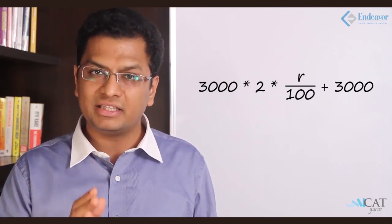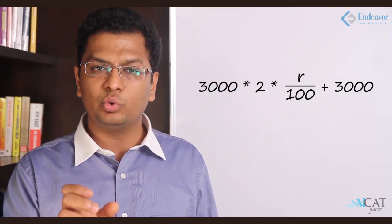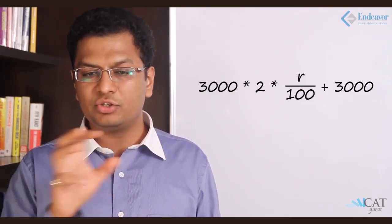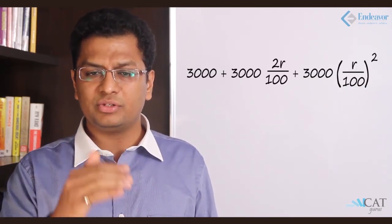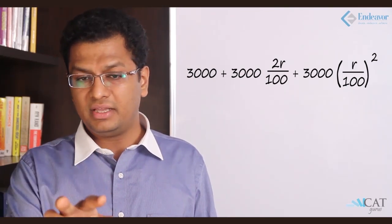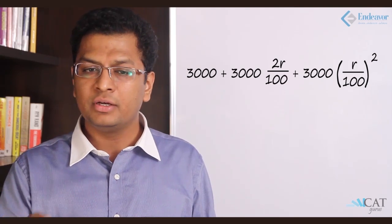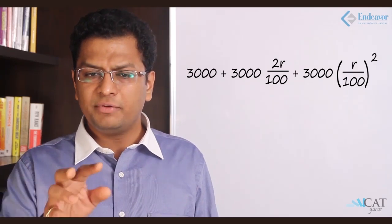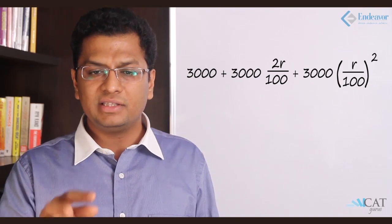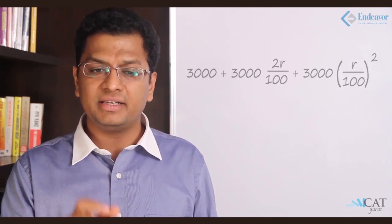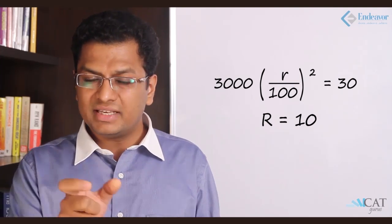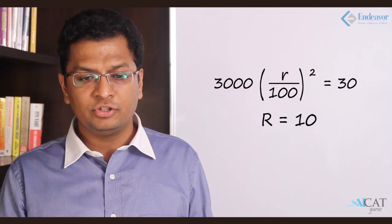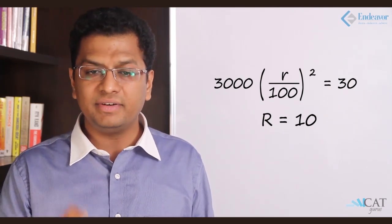An important distinction: the compound interest formula gives the total amount, while the simple interest formula gives only the interest — so we must add the principal of three thousand to the simple interest to compare. Expanding 3000 × (1 + r/100)² using (a + b)² = a² + 2ab + b² gives 3000 + 3000 × 2r/100 + 3000 × (r/100)². When we subtract the simple interest total, the 3000 and the middle term cancel out, leaving only 3000 × (r/100)² = 30.